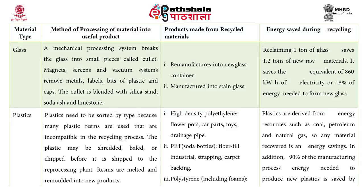Plastic needs to be sorted by type because many plastic resins are incompatible with each other in the recycling process. The plastics are then shredded, baled or chipped before being shipped to the reprocessing plant, where resins are melted and remolded into new products. Products from recycled plastics include high-density polyethylene made into flower pots, car parts, toys and drainage pipes; PET soda bottles used for fibre fill, industrial strapping and carpet packing; and polystyrene used for foams and desktop products. Recycling plastics saves almost 90 percent of the energy used for making new plastics and reduces stress on fossil fuels like coal, petroleum and natural gas.